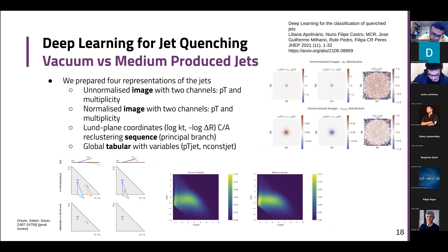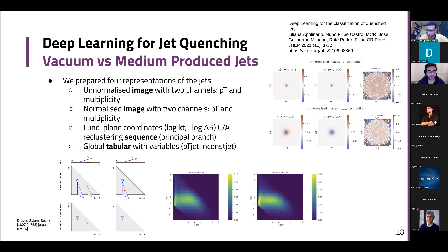We went a little beyond what the other paper did. You can represent the jets as images, and this is what we did. Here you can see the average image for the pT distribution, and there is a difference between the pT distribution of vacuum versus medium, and also in the number of constituents. We also wanted to address the discriminating power of using images normalized by pT and by the number of constituents — normalized images where both channels are normalized to sum to one.